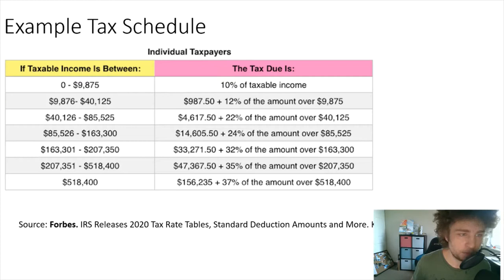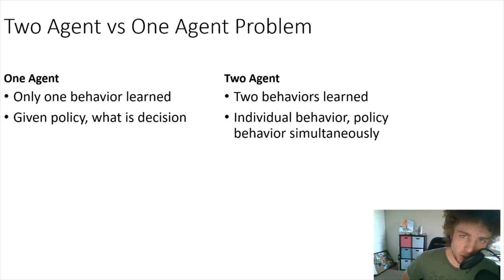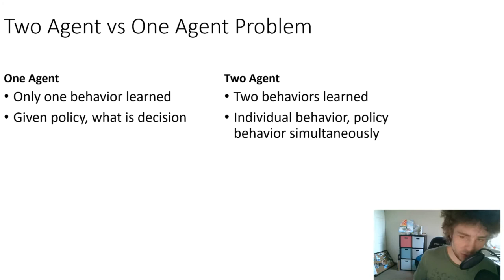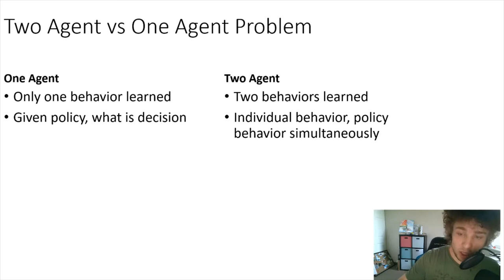This is a two-agent problem. They're essentially creating two reinforcement learning algorithms operating within each other. The first involves individual agents learning the best behaviors they can have to optimize their labor and utility given a policy. If they were just modeling how a person would respond to a given tax policy, that would be a one-agent problem, since you only need to model how the person responds to a single tax policy.